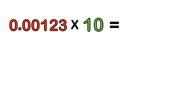How about 0.00123 times 10? The same technique applies. Count the number of zeros: one zero equals one jump. We jump over the first zero. So the answer is 0.0123.